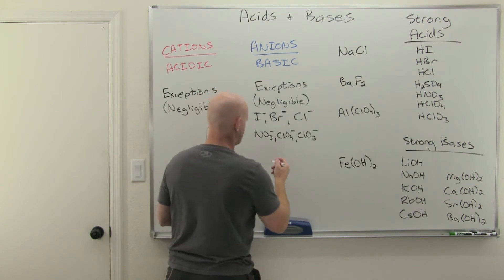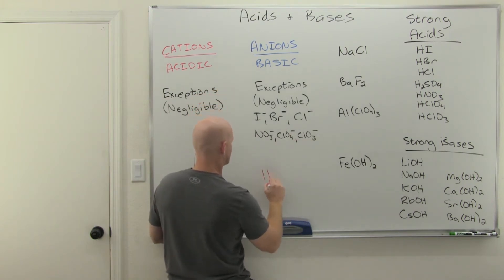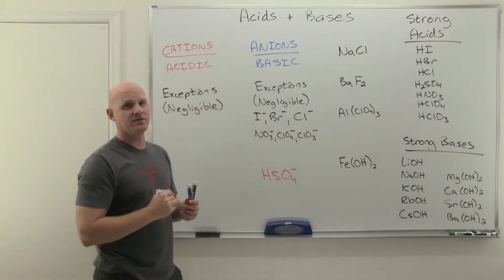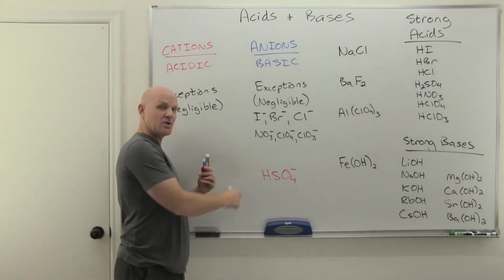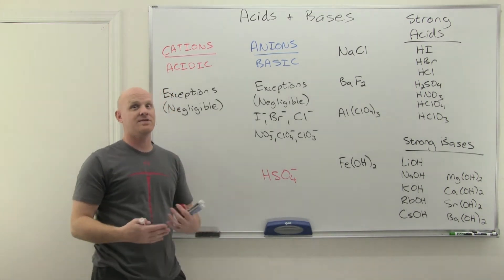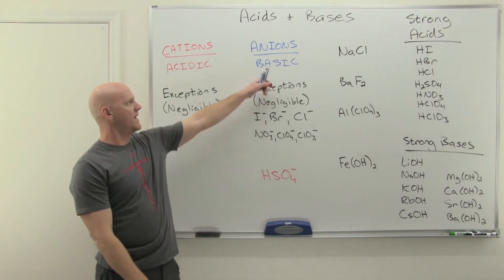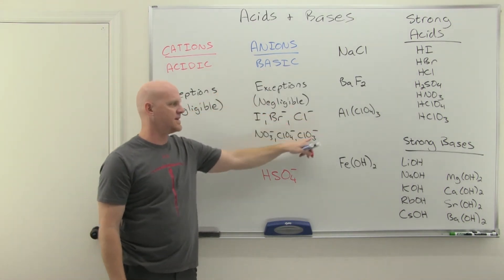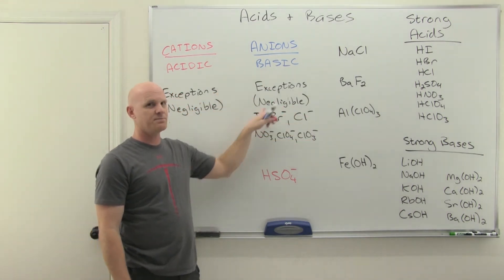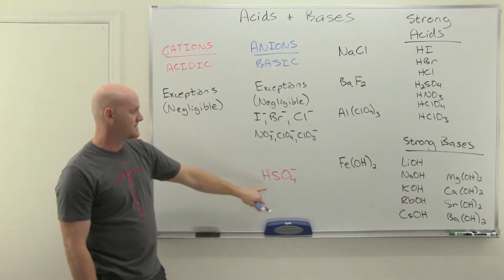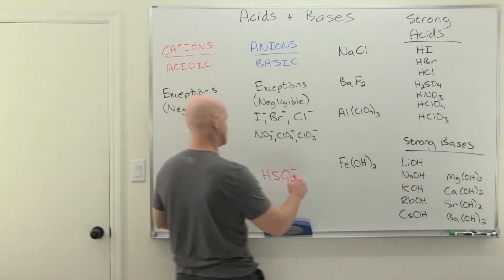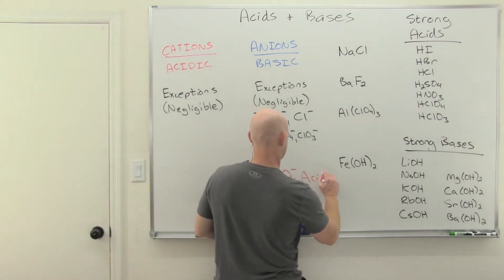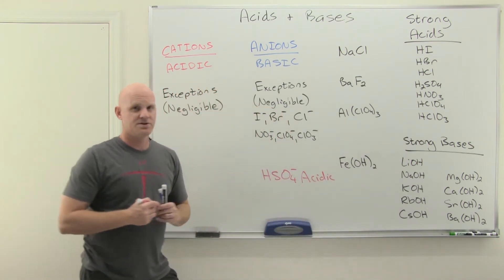The conjugate base of H2SO4 is HSO4-. We found out that just a little bit ago that he actually was a weak acid. He's kind of the exception of all exceptions. Almost all anions are basic. These six are negligible, they're neutral, they don't affect pH at all. But he's actually acidic, definitely an exception.